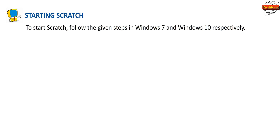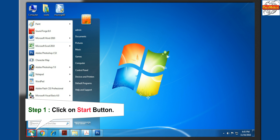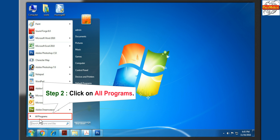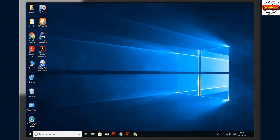To start Scratch, follow the given steps in Windows 7 and Windows 10 respectively. To start Scratch in Windows 7: Step 1, click on the Start button. Step 2, click on All Programs. Then click on Scratch 2 to start.